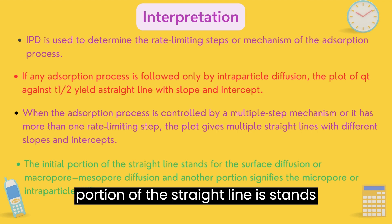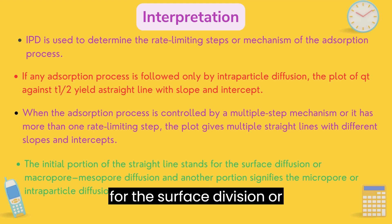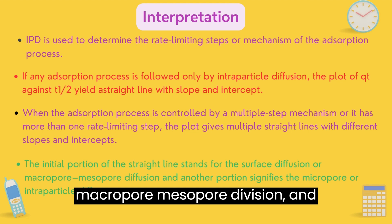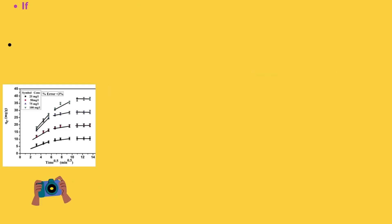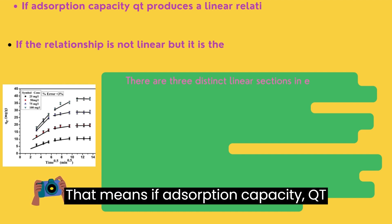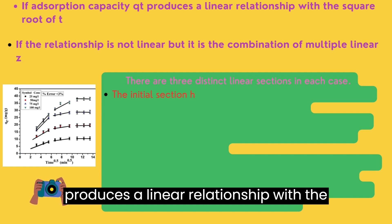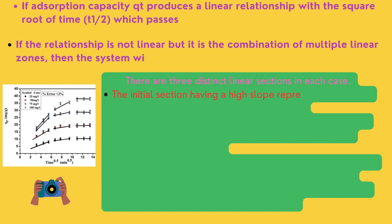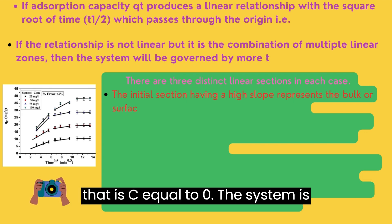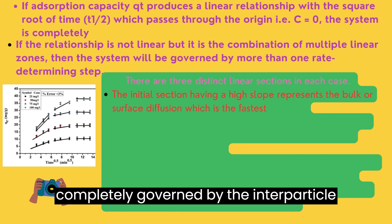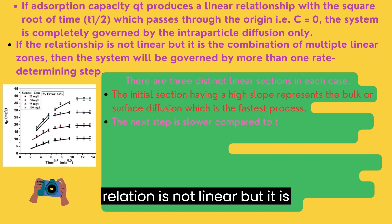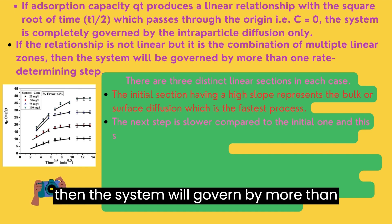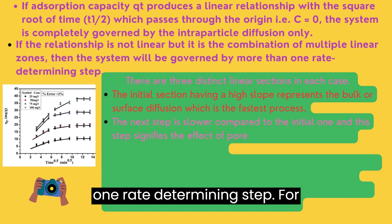The initial portion of the straight line stands for the surface diffusion or macropore-mesopore diffusion, and another portion signifies the macropore or intraparticle diffusion. That means if adsorption capacity Qt produces a linear relationship with the square root of time which passes through the origin — that is, c equals zero — the system is completely governed by intraparticle diffusion only. If the relation is not linear but a combination of multi-linear zones, then the system is governed by more than one rate-determining step.